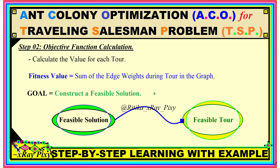In Step 2, we calculate the objective function value. We will calculate the fitness value for each route, where the fitness value is the sum of the edge weights during the tour. We will calculate the edge weights in the upcoming steps. Our goal is to construct a feasible solution — a feasible tour for the salesperson.